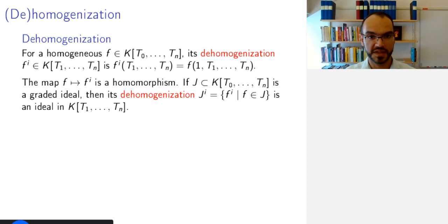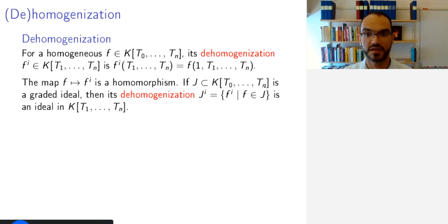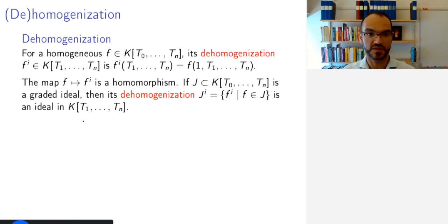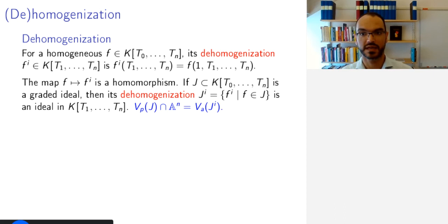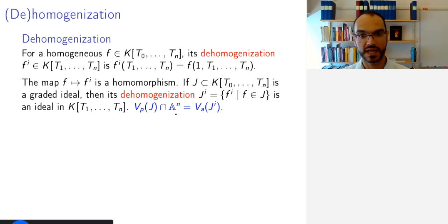The map sending F to F^i is a ring homomorphism between the respective polynomial rings. So if we have a graded ideal in variables T0 up to Tn, we can define its de-homogenization as the set of all de-homogenizations of elements in the ideal. This is indeed an ideal because this map is surjective, and it will be an ideal in the polynomial ring in variables T1 to Tn. One can check that the points in A^n of the projective zero set of J are exactly the zeros of the ideal J^i.